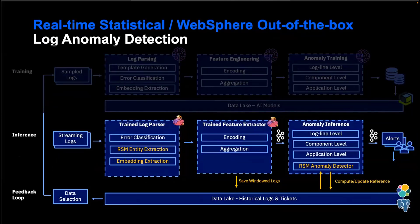Recently, we introduced real-time statistical models and the WebSphere out-of-the-box models for anomaly detection. The main difference of these new models from the natural language models is that they can provide insights immediately without offline training. The real-time statistical models use information from our entity extraction, such as error conditions, to look for anomalies. The good thing about this model is that it only requires 30 minutes of data to learn a baseline, and it will be updated in real-time as more data becomes available.